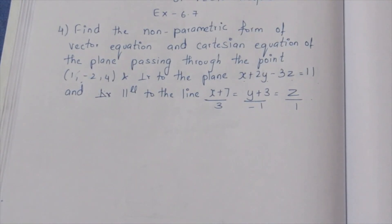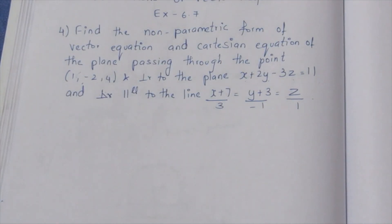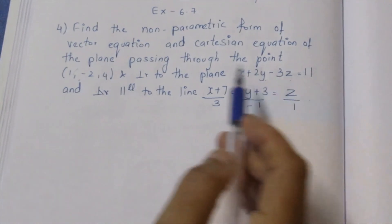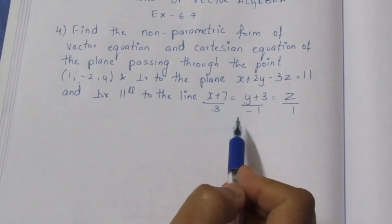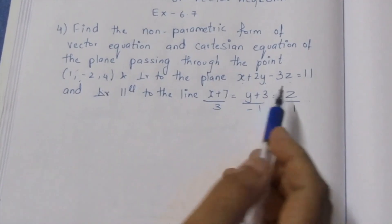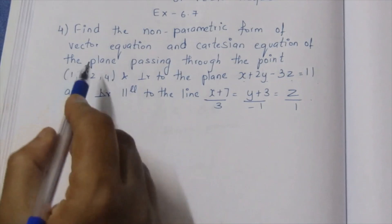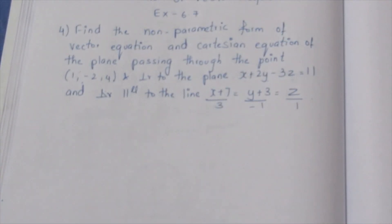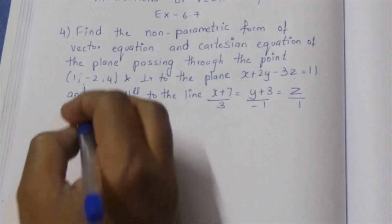If you have 3 points, the plane equation is straightforward. If you have to use all the points, we can work with vectors A, B, C. If you have vectors A, B, C, we can use those to find the plane.